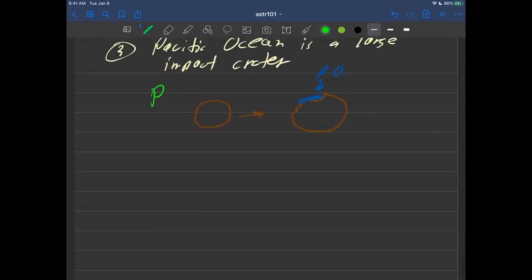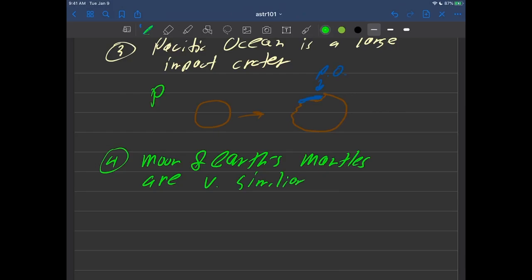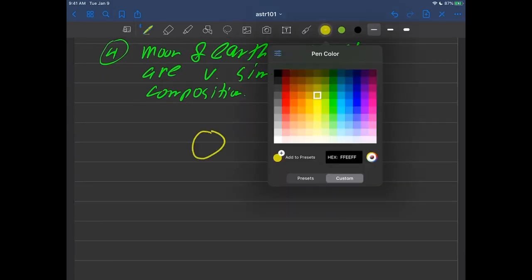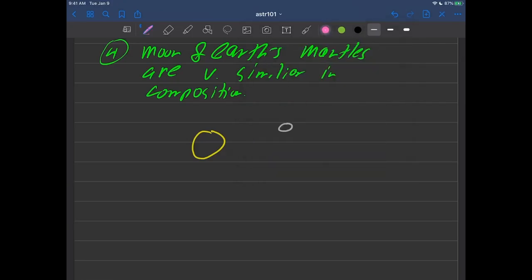One more bit of evidence here, number four. Number four on the evidence then is that the moon's mantles are very similar in composition. Very similar composition. So let's draw the two and make sure we're clear on what this means. So here's the earth and here's the moon. Okay. And where the mantles, well remember the mantles are just this outermost region of the earth, so this is the earth right here and this is the moon, the outermost region. So these pink regions are similar here.